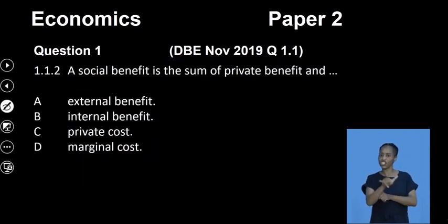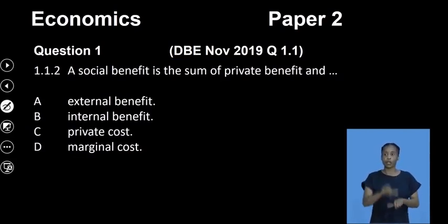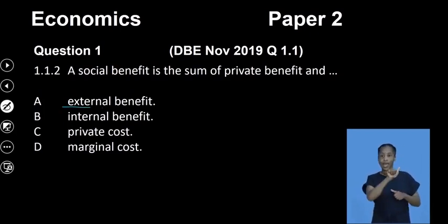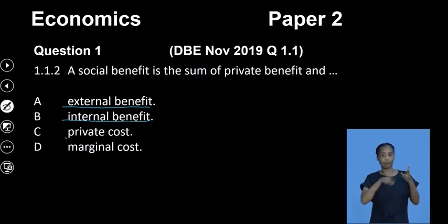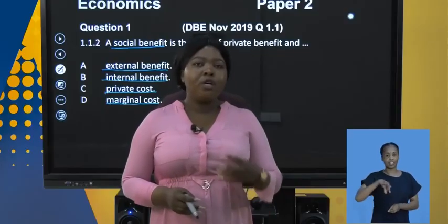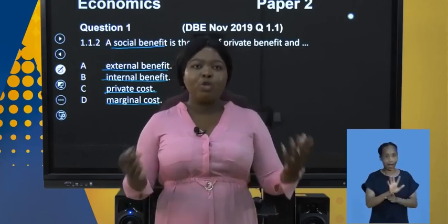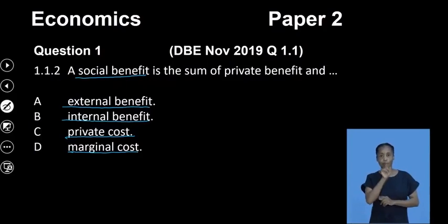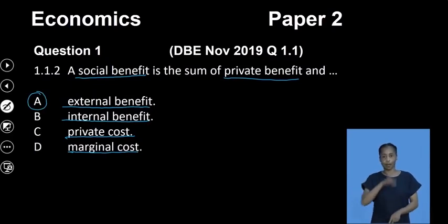Question 1.12 says: a social benefit is the sum of a private benefit and... Option A says it's the sum of a private benefit and an external benefit. B says an internal benefit. C says a private cost. D says a marginal cost. When we speak of a social benefit, we are looking at something beneficial not only to the purchaser of a product but also to the community as a whole. Our answer is A — a private benefit and an external benefit.